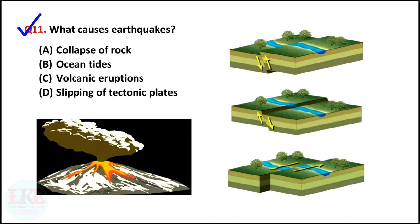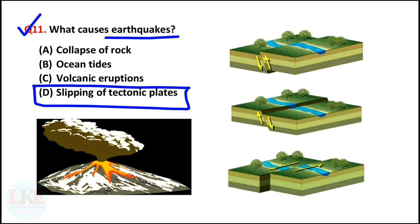Question number 11: what causes earthquakes? Right answer option D: slipping of tectonic plates. Most earthquakes are caused by the slipping of tectonic plates. You can see how the plates move from bottom to top, top to bottom, and slide to the side, causing earthquakes. Some minor earthquakes can also be caused by volcanic activity, erosion and collapse of rocks on the earth's surface.